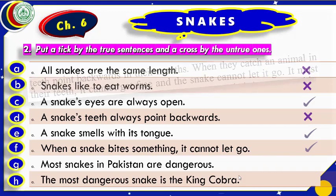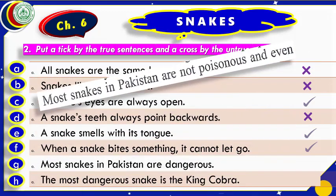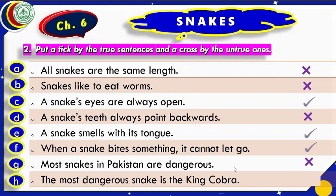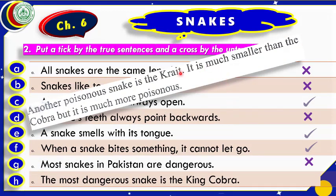'Most snakes in Pakistan are dangerous.' It is not like this — most are not dangerous. The statement in the lesson says: 'Most snakes in Pakistan are not poisonous.' So this statement is untrue. 'The most dangerous snake is the king cobra.' This is also wrong — the krait is much smaller than the cobra but it is much more poisonous. The krait is more dangerous, so we put a cross.